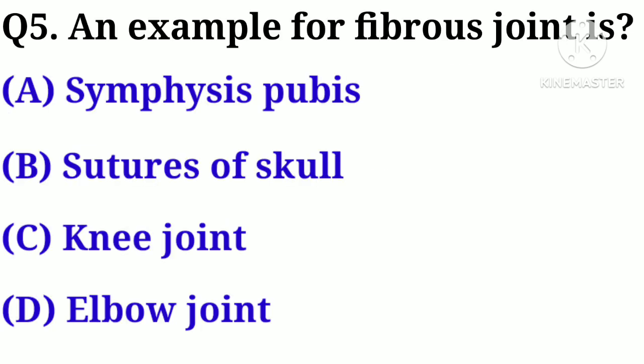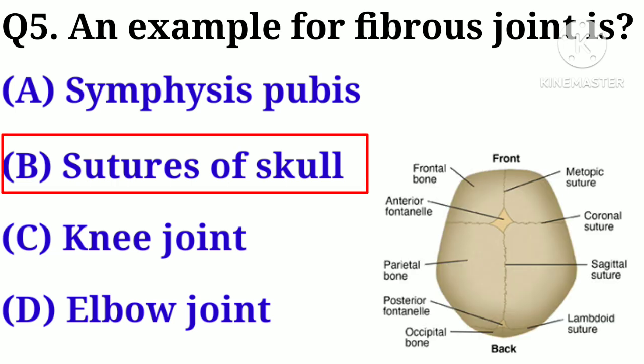Q5. An example of a fibrous joint is: A. Symphysis pubis, B. Sutures, C. Knee joint, D. Elbow joint. Answer: B. Sutures.